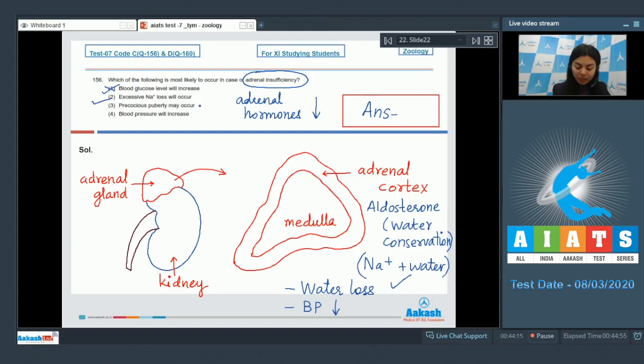Precocious puberty may occur - this is possible but the question is asking about most likely, so option two is better suited here. Option three, precocious puberty may occur - no, that would be incorrect. In fact, puberty would be delayed because of insufficiency of sex corticoids. And option four, blood pressure will increase - this is also incorrect. With the loss of water, the blood pressure would decrease.